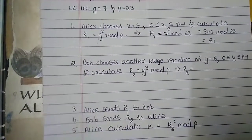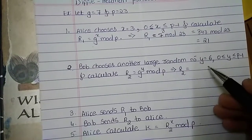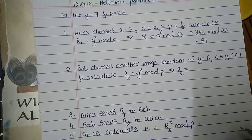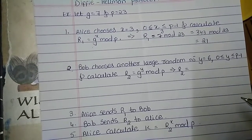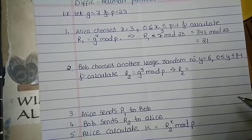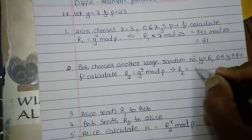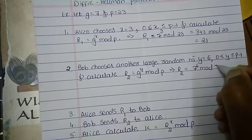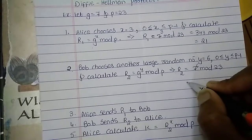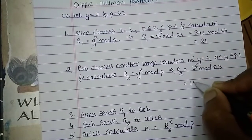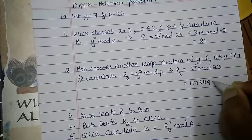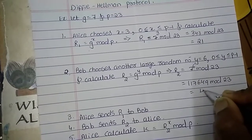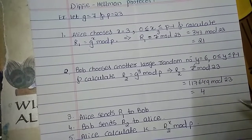In the second step, Bob is choosing another random number — I am taking the value of Y as 6. This 6 is greater than 0 and less than P minus 1. Now let us calculate the value of R2 using the formula G to the power Y mod P. So R2: G is nothing but 7, Y we have taken as 6, mod 23. So 7 to the power 6 is nothing but 117,649 mod 23, and here we are getting the remainder as 4. You can calculate and check — you will get the remainder as 4.